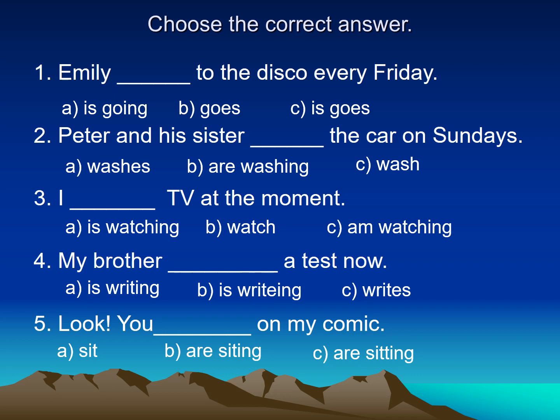Number one: Emily to the disco every Friday. This is present simple — I speak about her habit. Every Friday she goes to the disco. Present simple with he/she/it requires adding S, ES, or IES. Number two: Peter and his sister ___ the car on Sundays. On Sundays means every Sunday, so it's a habit. Peter and his sister is like 'they' — plural — so in the present simple I keep the verb as it is: Peter and his sister wash the car on Sundays.